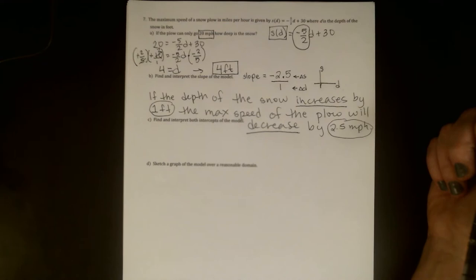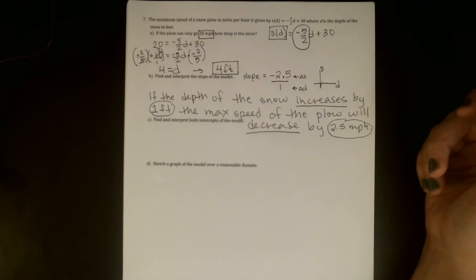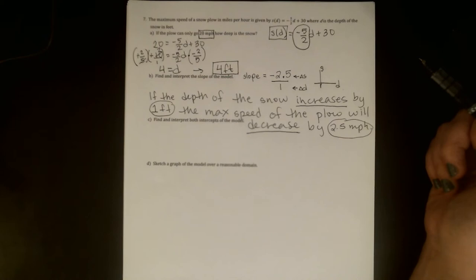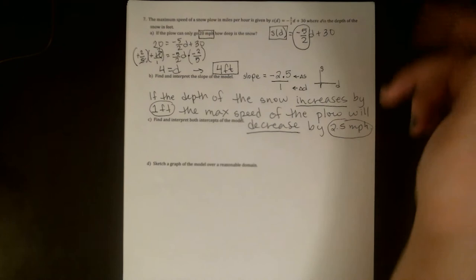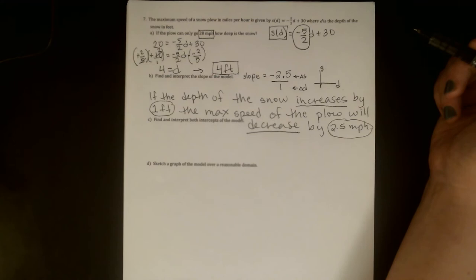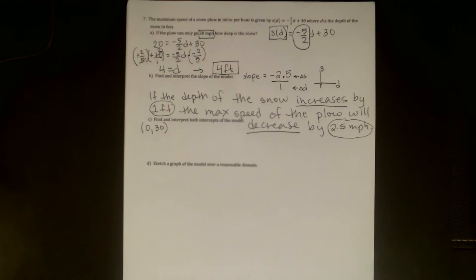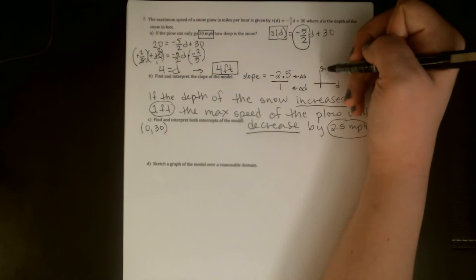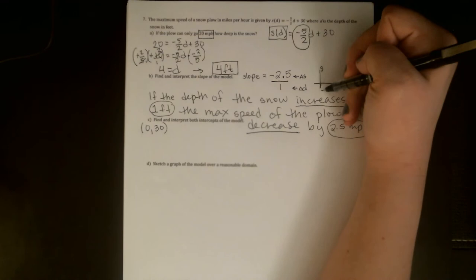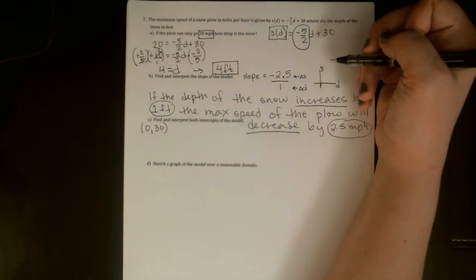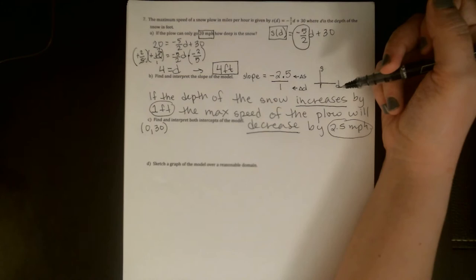Next part, we want to find and interpret both intercepts of the model. When I say interpret, I mean the exact same thing as when I say explain using everyday language. So one of our intercepts we get for free, the other one we'll have to do just a little bit of work to find. So I know that my vertical intercept, and since I'm not using y as a variable, it's not really fair to call that a y intercept. But it is easy enough to say this is my s intercept. Or if you want to be a little more general and not attach yourself to a letter, you can just say it's my vertical intercept. That's where I cross the vertical axis.